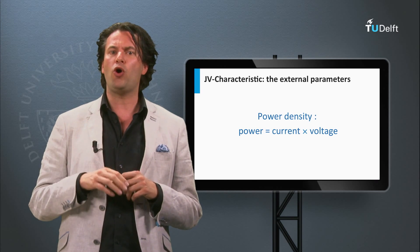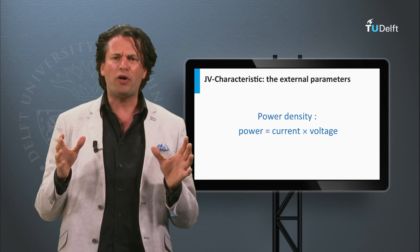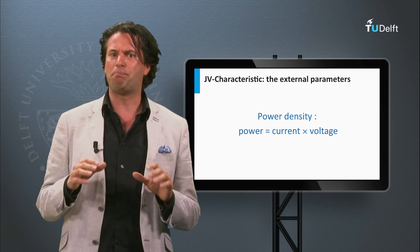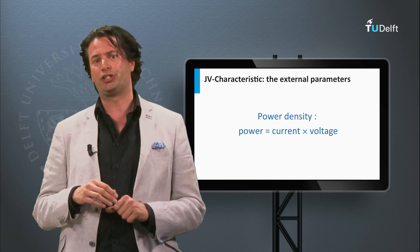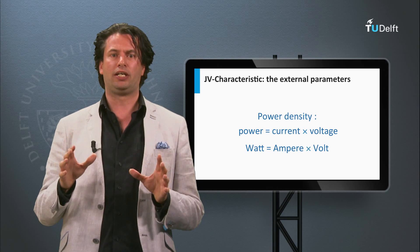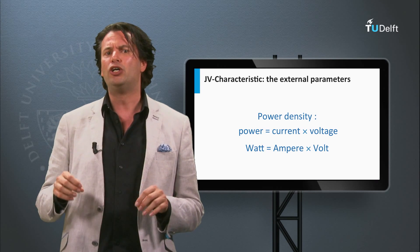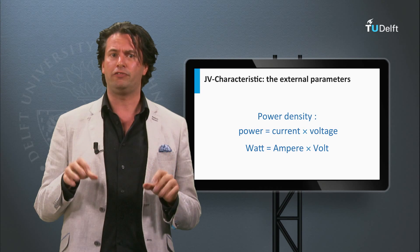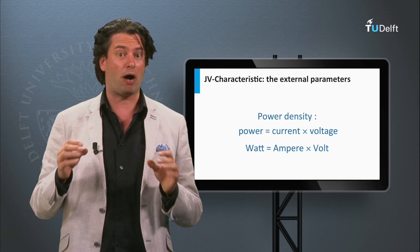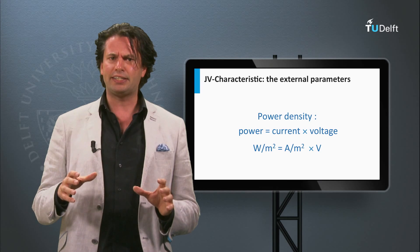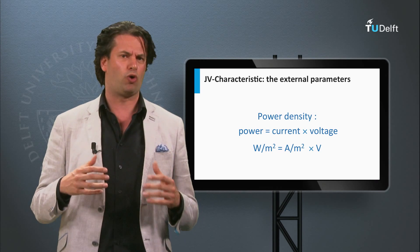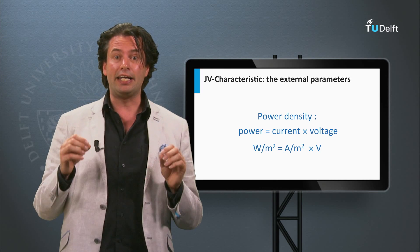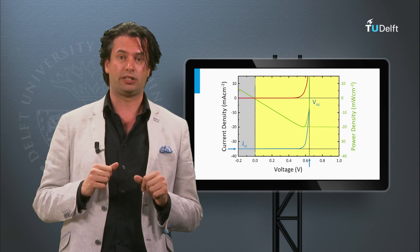Now we want to know how much power a solar cell can deliver and how power is related to the JV curve. As known from physics, power equals current times voltage, with the unit watt — equivalent to ampere times volt. Since we use current density in JV curves, we talk about power density, which is power per area. Current density is expressed in amps per square meter or milliamps per square centimeter, so power density is expressed in watts per square meter or milliwatts per square centimeter.